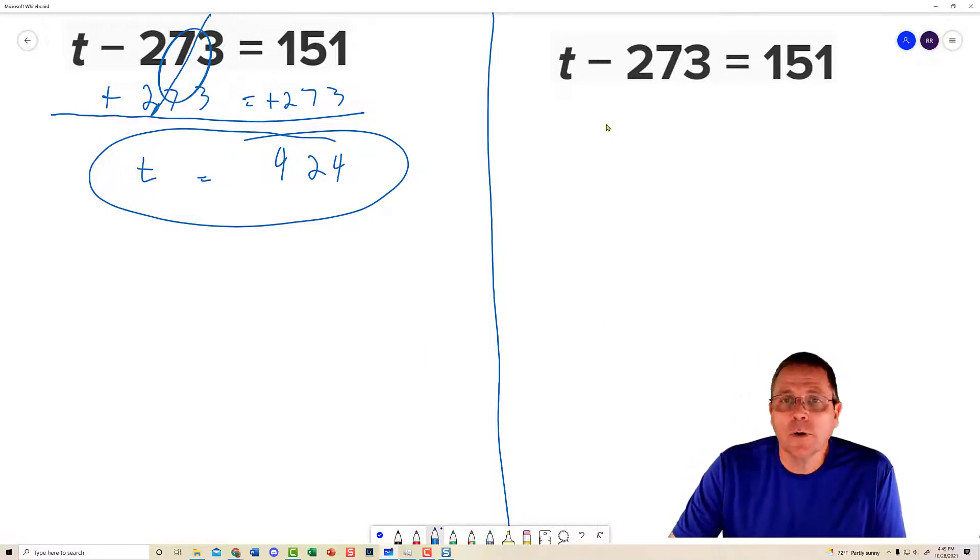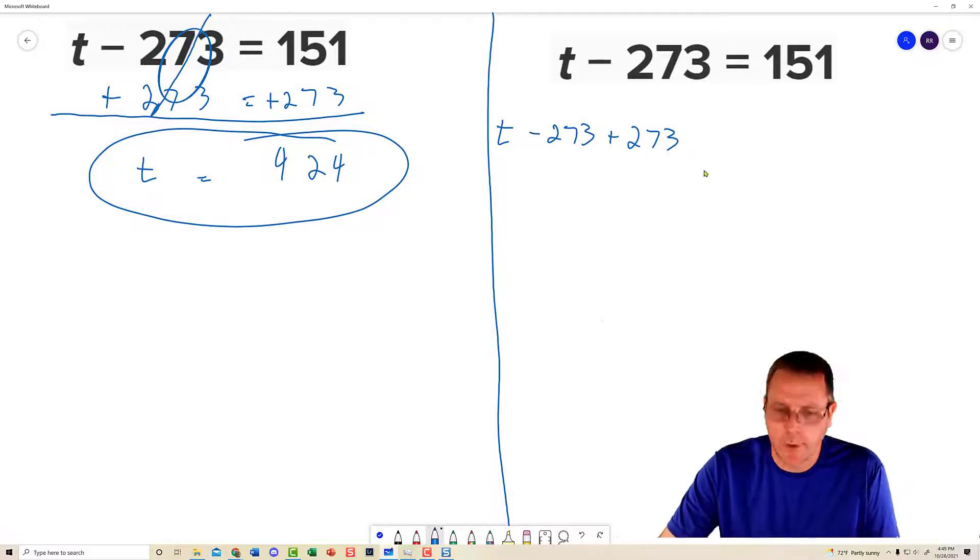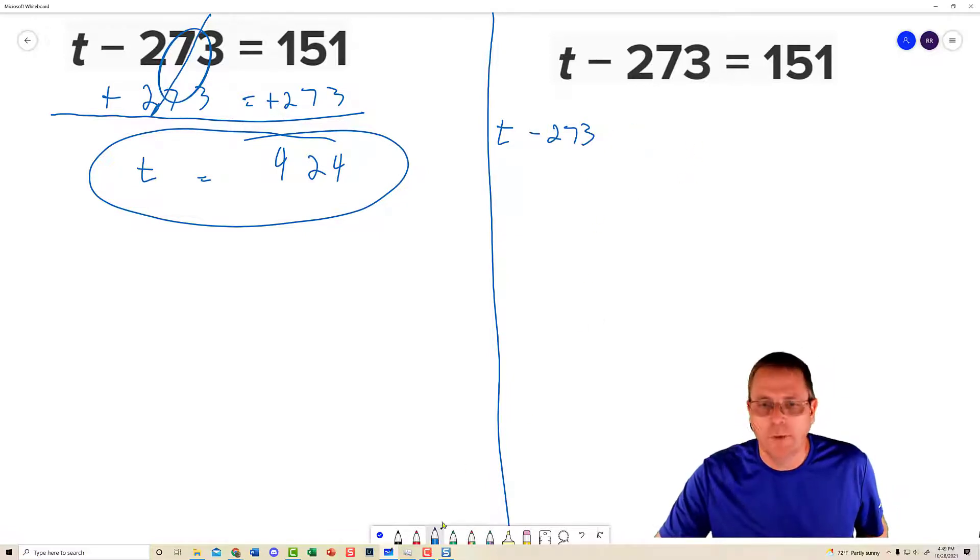Over here, I'm going to work at the same problem only now I'm going to use the horizontal method. Which isn't as pretty for when you're working with these. But when you're working with fractions, you really want that. So I have t minus 273 plus 273. Actually, let me do that in red so you all can see where the difference part is. Plus 273. Go back to my blue.